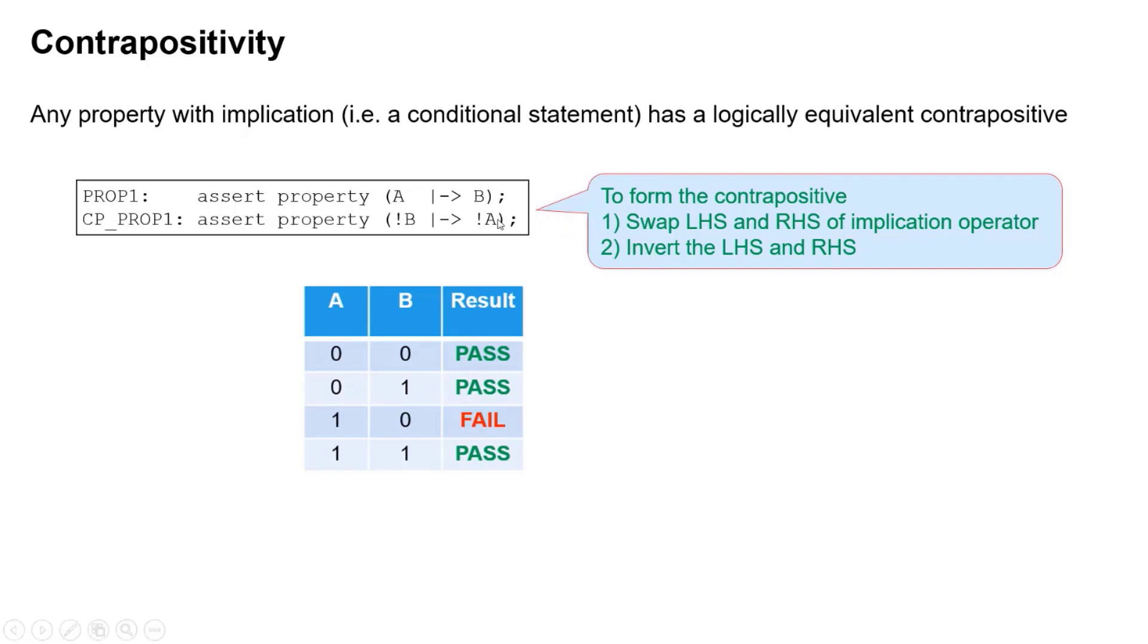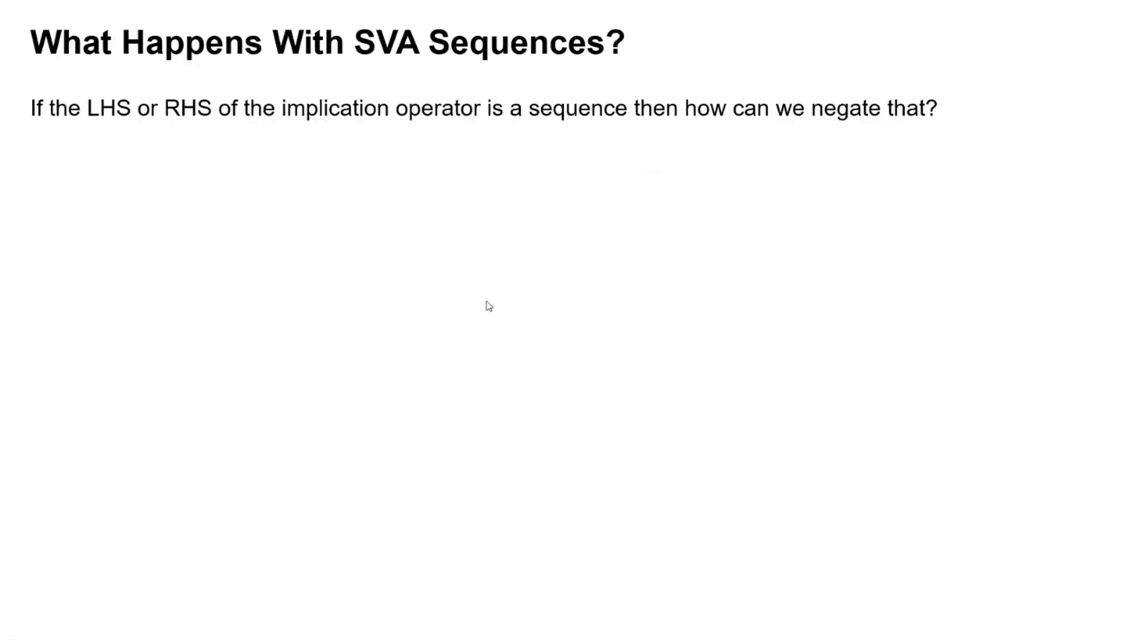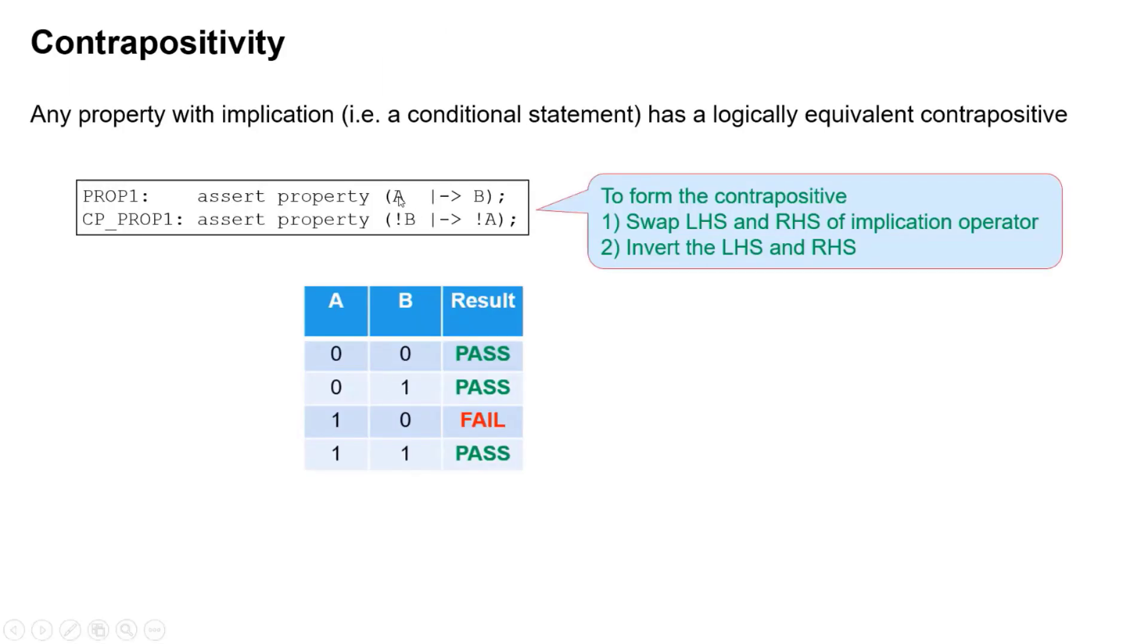And in order to form this contrapositive, all we've done is swap A and B, swap left for right on the implication operator and invert both sides. So if we were talking about this in an SVA property, if you were using this in formal, for example, it might be worth writing, if these are booleans A and B.